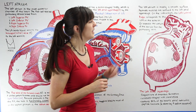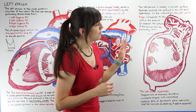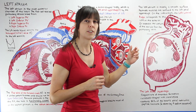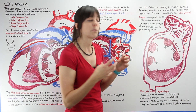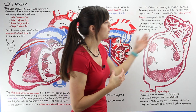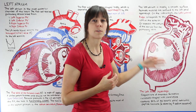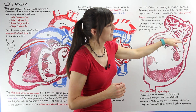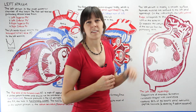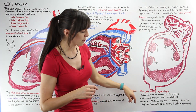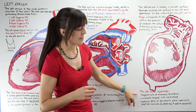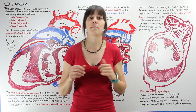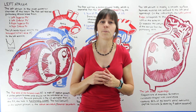Every once in a while in surgery, patients who have atrial fibrillation — a condition where blood pools inside the chambers of the atria — may have the left atrial appendage surgically sealed off, because it is such a prominent site for thrombus formation. And that covers the structures you'll find in the left atrium.